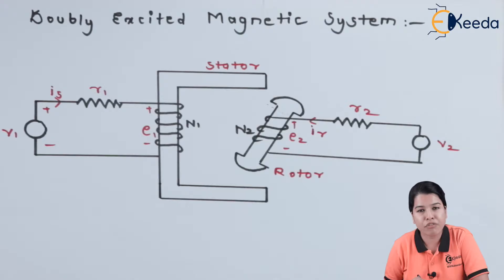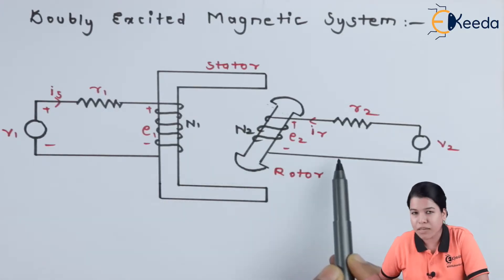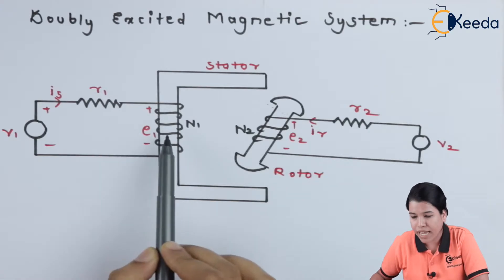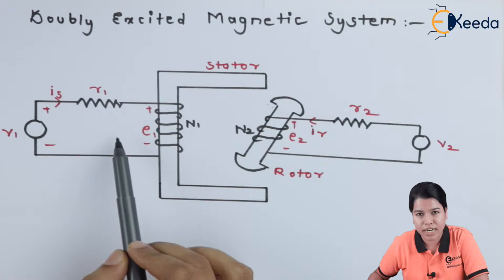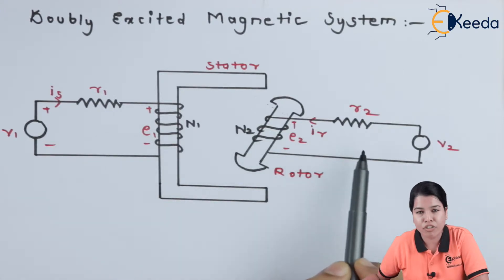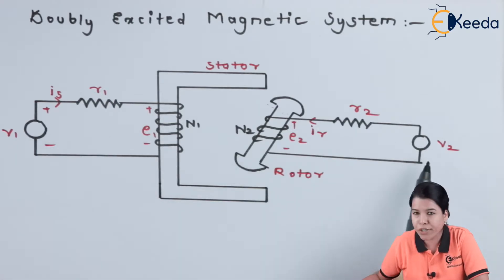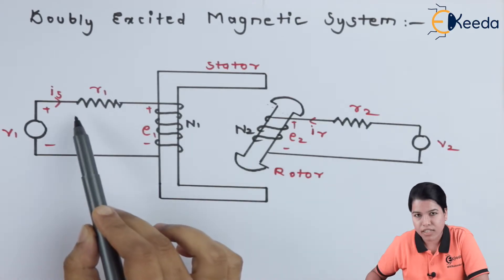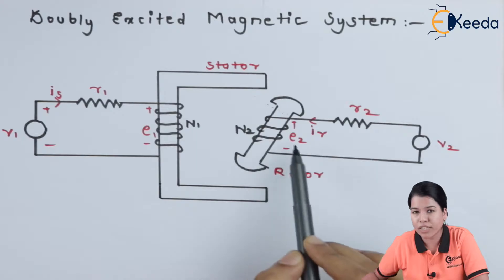In order to derive the formula for torque in the doubly excited magnetic system, the stator is supplied separately by source V1 and the rotor is supplied separately by source V2. There are two exciting coils having N1 turns and N2 turns. R1 is the resistance for the stator exciting coil, R2 is the resistance for the rotor exciting coil. V1 is the supply voltage for the stator, V2 for the rotor.